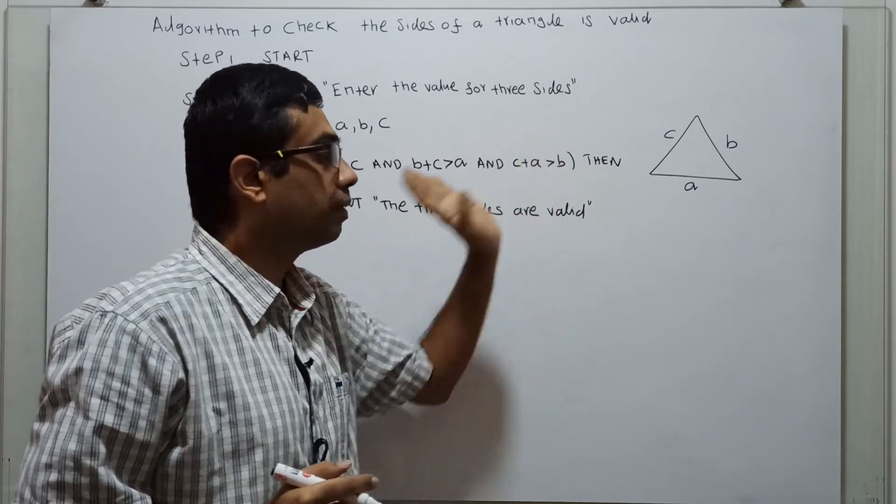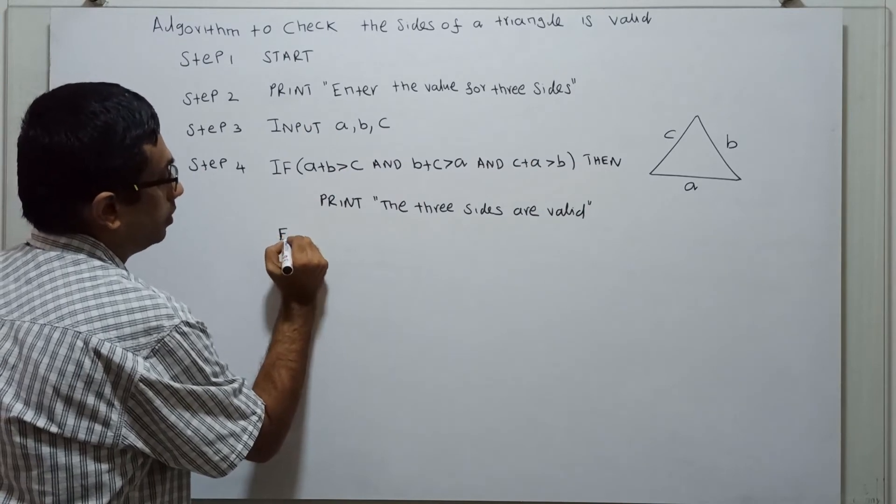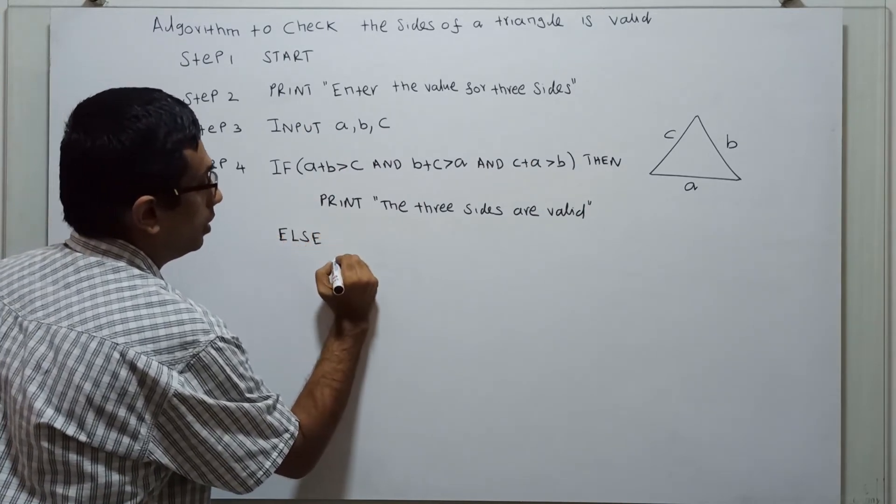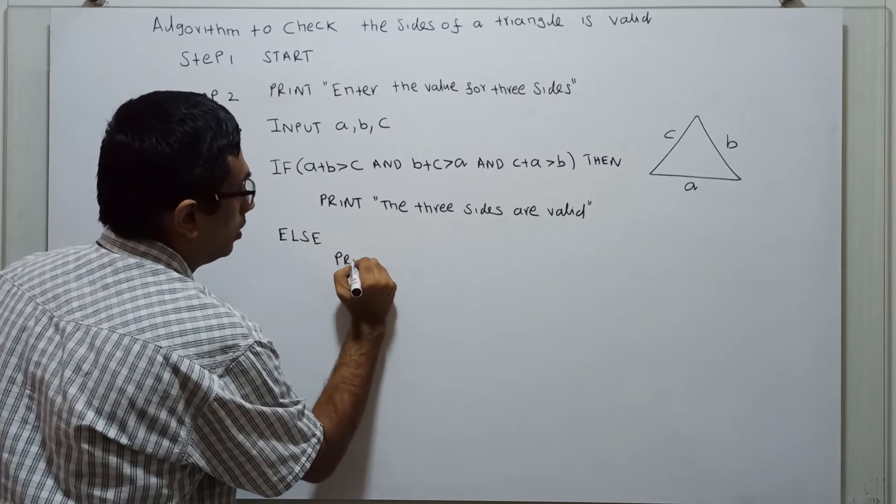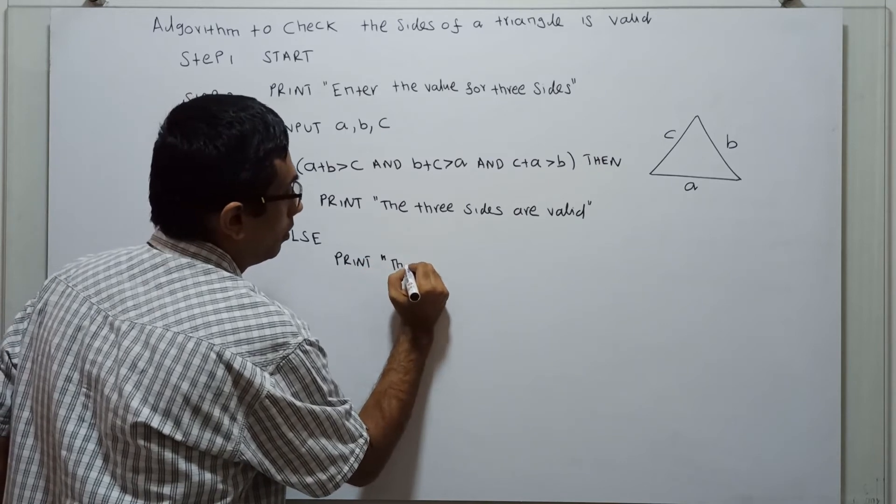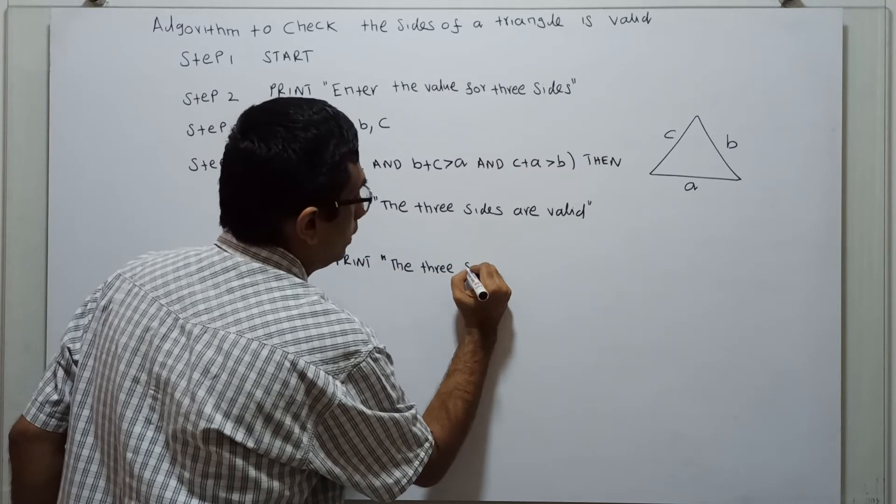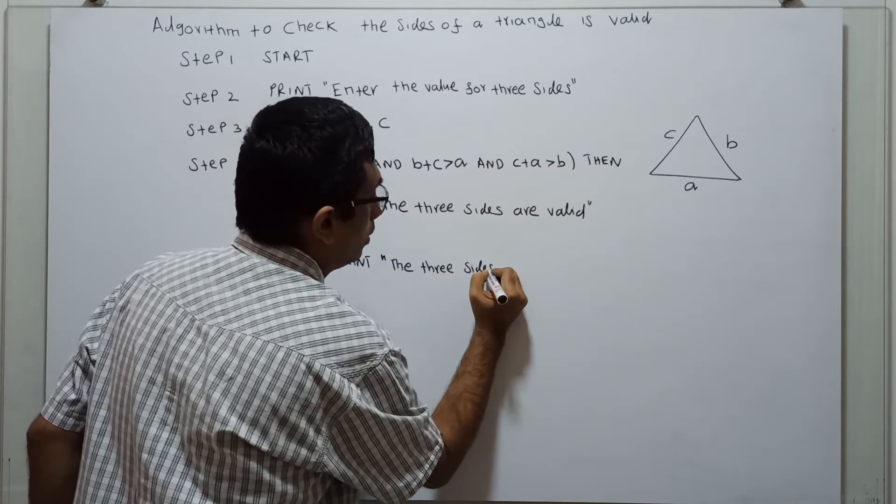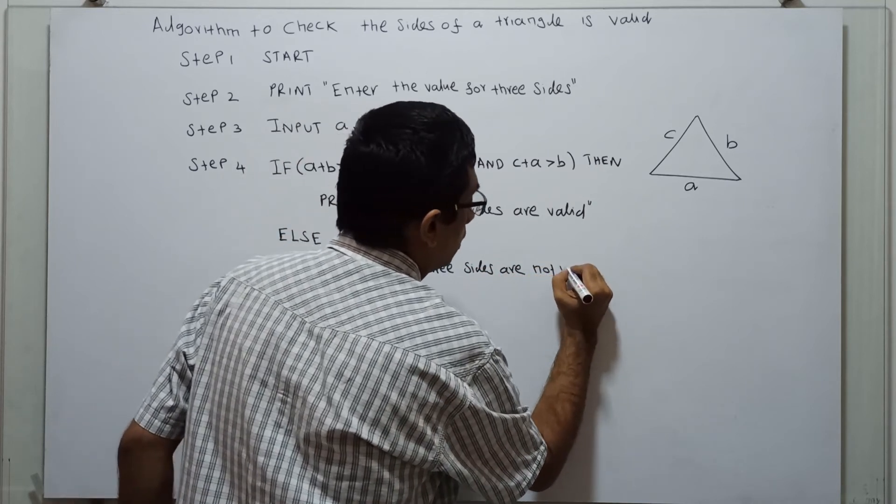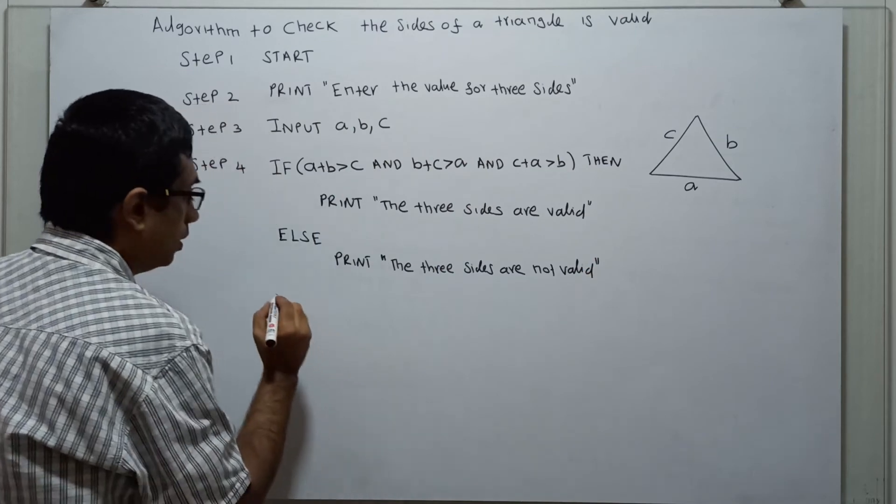If any one of the condition is false, then the three sides are not valid. Print the three sides are not valid.